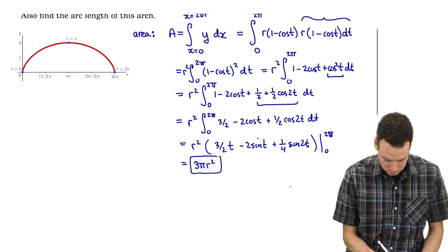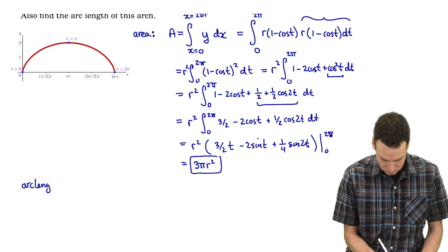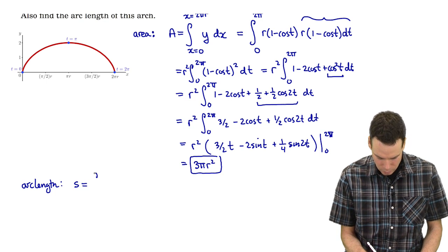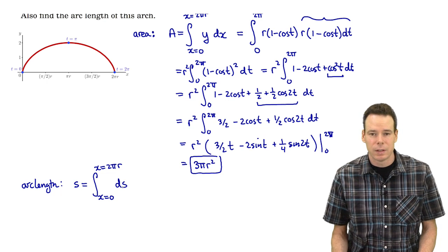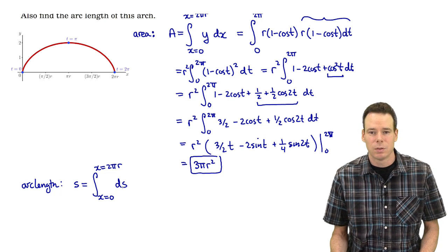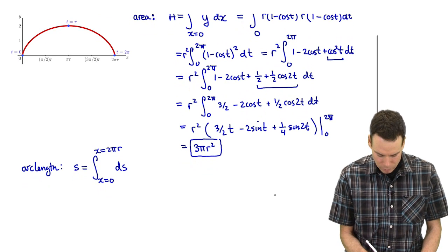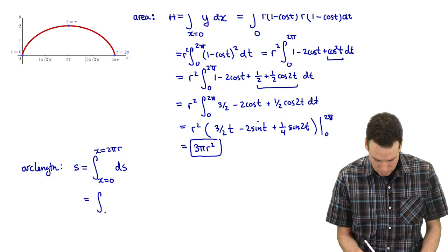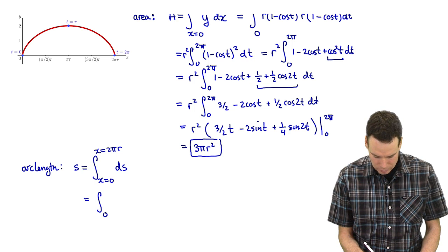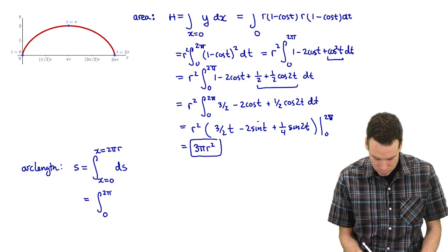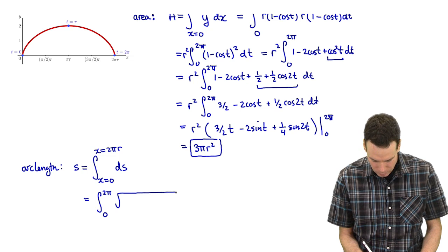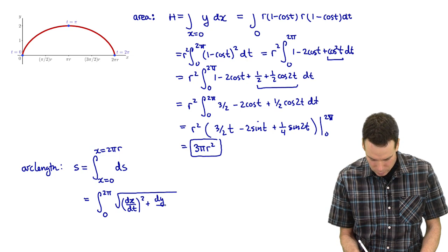Now for the arc length. The arc length s is the integral from x equals 0 to x equals 2πr of ds, the arc length differential. Putting everything in terms of t: x equals 0 corresponds to t equals 0, and x equals 2πr corresponds to t equals 2π. The arc length differential ds is the square root of (dx/dt)² plus (dy/dt)² times dt.